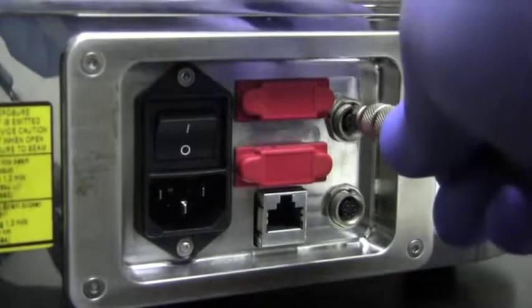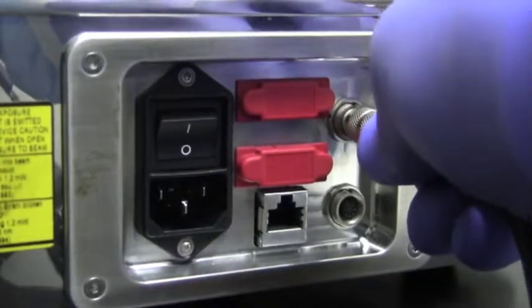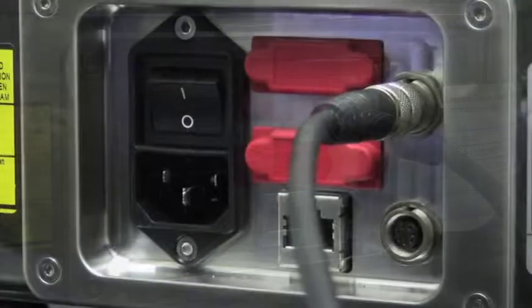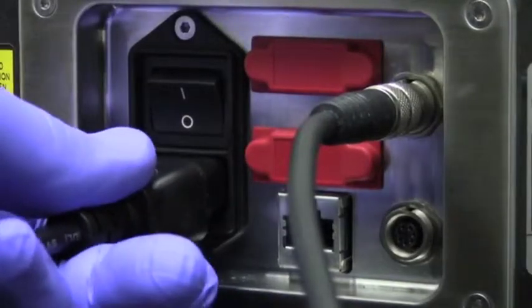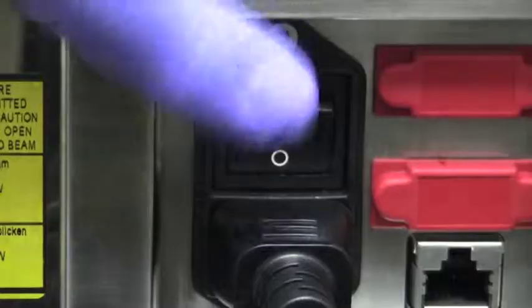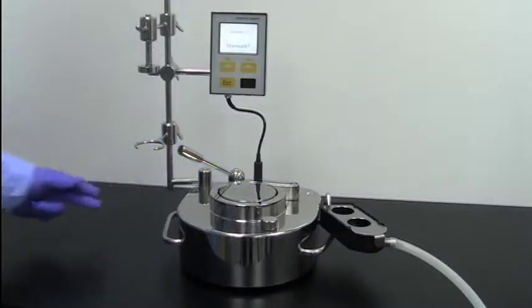On the rear panel, connect the foot switch to its socket. Attach the plug to the AC power socket. Finally, press the ON-OFF switch to power up the Sterisart.